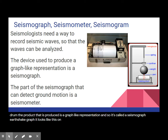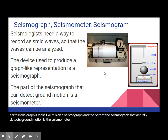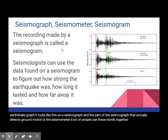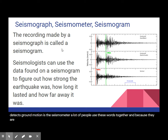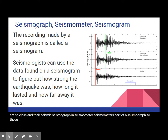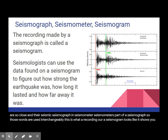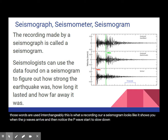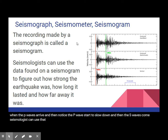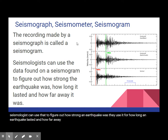It looks like this on a seismograph. The part of the seismograph that actually detects ground motion is the seismometer. A lot of people use these words together — seismograph and seismometer — because seismometer is part of a seismograph, so those words are used interchangeably. This is what a recording, or a seismogram, looks like. It shows you when the P waves arrive, and then notice the P waves start to slow down and then the S waves come. Seismologists can use that to figure out how strong an earthquake was, how long it lasted, and how far away it was. There is a calculation using the difference between the P wave and the S wave arrival times.